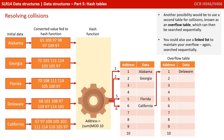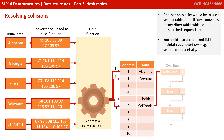Another possibility would be to use a second table for collisions, known as an overflow table, which can then be searched sequentially. You could also use a linked list to maintain your overflow, again searched sequentially.